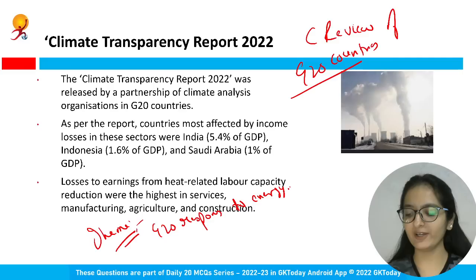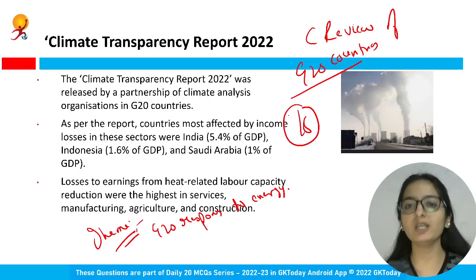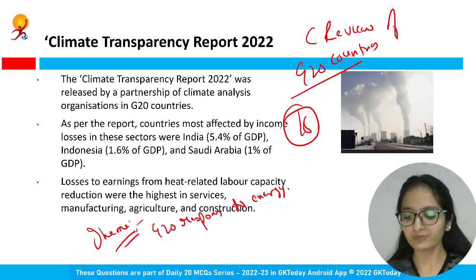This report is prepared by experts from 16 partner organizations covering the majority of G20 countries. From the Indian perspective, there has been an increase in global mean temperature.